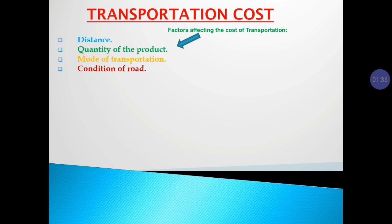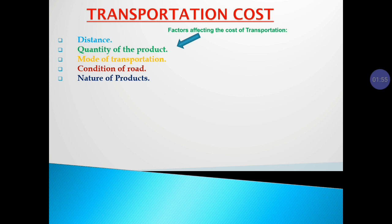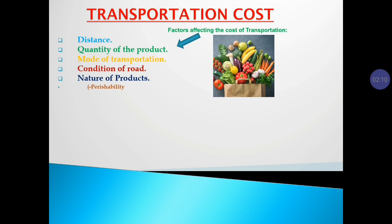Another important factor is condition of road. If the condition of road is smooth, the cost is likely to be less. If the condition of road is not safe, costs are going to be on the higher side. Nature of the products also matters — costs depend on it. If the products are perishable, like vegetables, special care is required, so costs are going to be on the higher side.